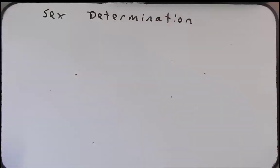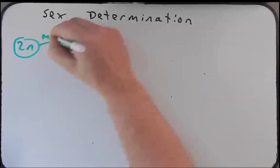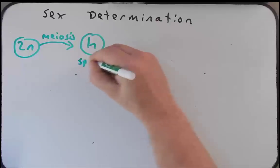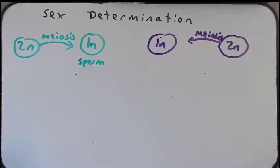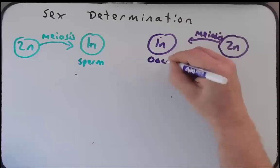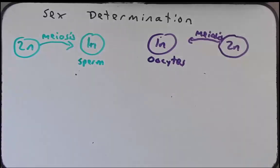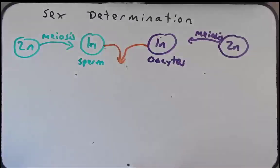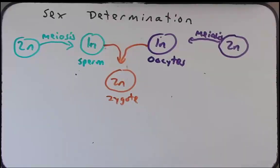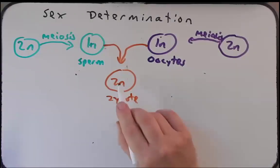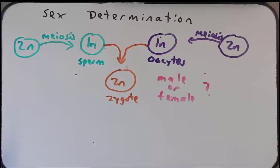Let's go ahead and get started. Earlier in this semester we talked about how males who are diploid produce gametes that are haploid through a process of meiosis and gamete maturation to form the mature sperm. Females also take a diploid cell and through meiosis produce haploid gametes, and through a process of maturation they produce oocytes. The female gamete, the oocyte, is much larger than the male gamete, the sperm. These two gametes come together through fertilization to make a diploid embryo — a zygote — which will then go on to form a mature organism. What we haven't talked about yet is what determines whether this fertilized egg will be male or female.